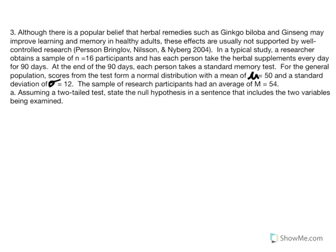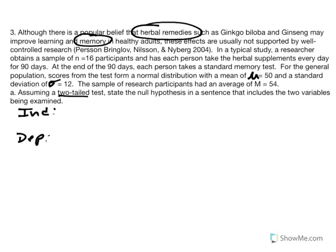A two-tailed hypothesis indicates that we are broad and general — we are not specifying the direction we anticipate our results. We're not saying the remedy will increase or decrease memory; we just state it has an effect on memory. The dependent variable is memory, and the independent variable is the herbal remedy.